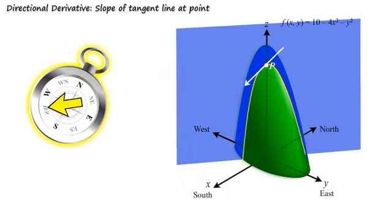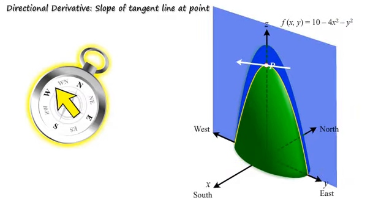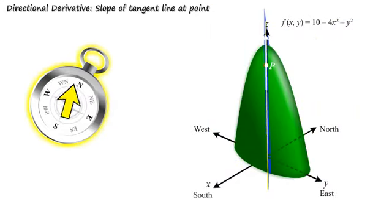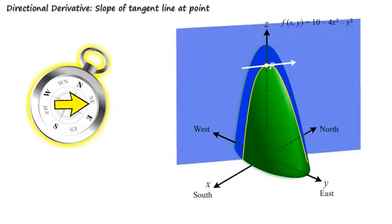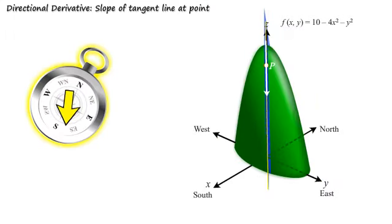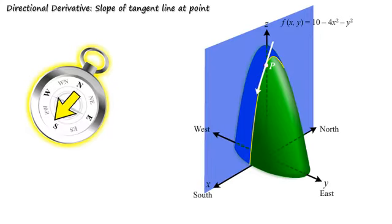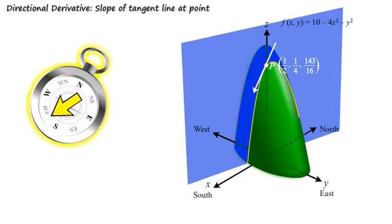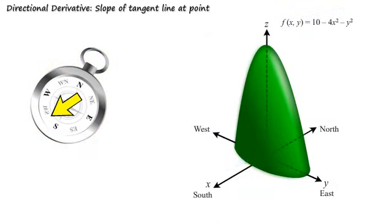Observe as we rotate the compass to choose a direction, the vertical plane intersecting the surface rotates and generates a new curve of intersection. This, in turn, generates a new tangent line at the point p. The slope of these tangent lines at the point p is nothing but the directional derivative of the given function at the point p in the specified direction.